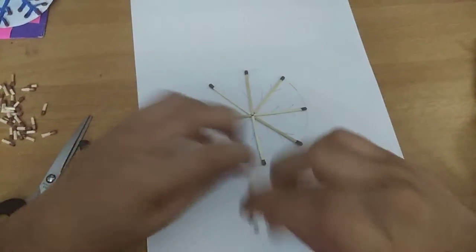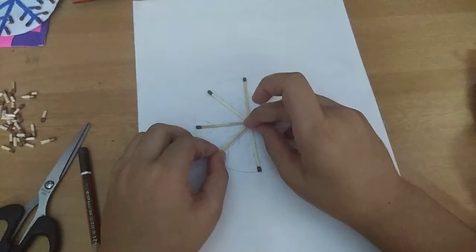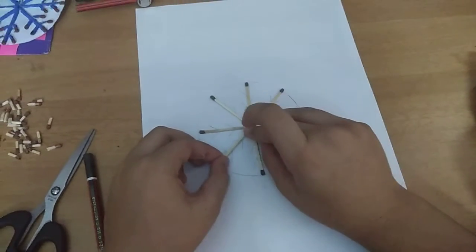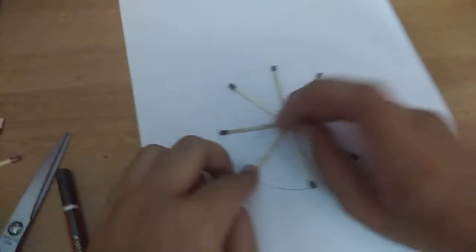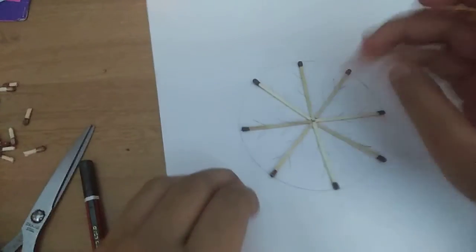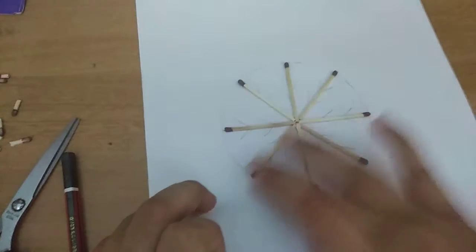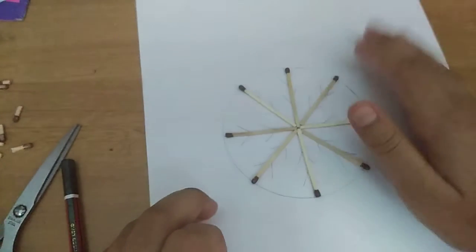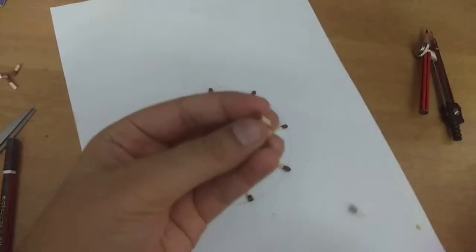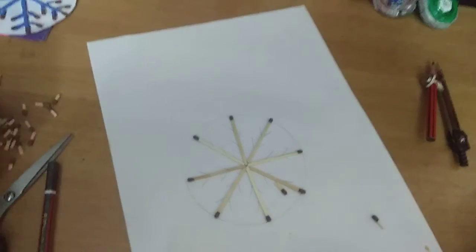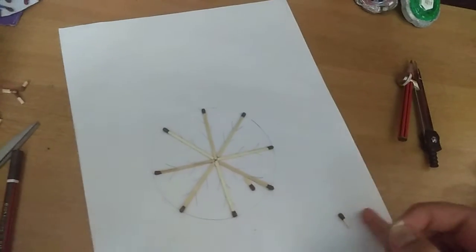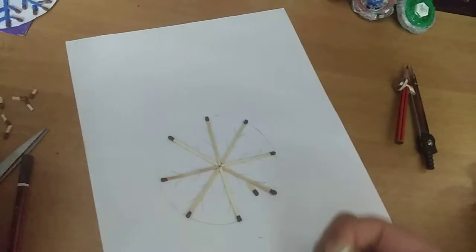So now I have stuck all, so last one is remaining, like this. Yeah, now it's done. You can clearly see this is the main part of the snowflake. So now the small cuttings which I had of matchsticks, I am sticking this, see how.